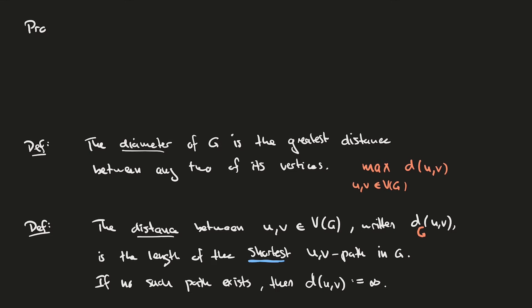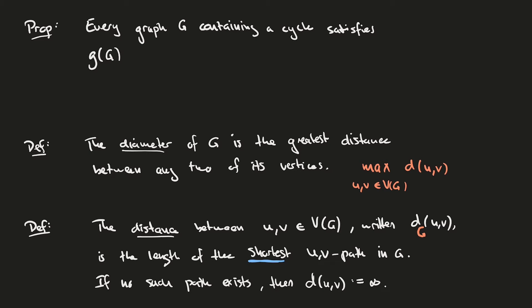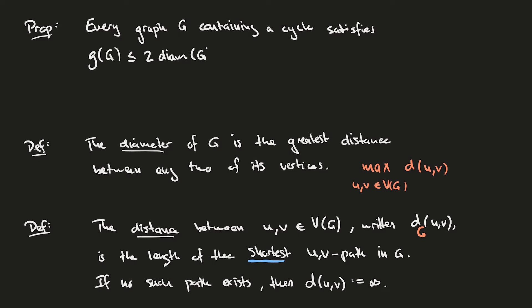The proposition states that every graph G containing a cycle satisfies that the girth of G is less than or equal to 2 times the diameter of G plus 1. The proof of this again involves maximality.